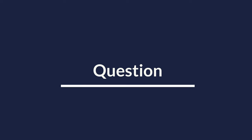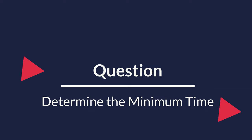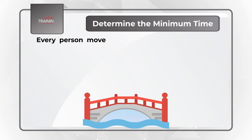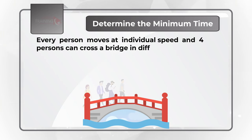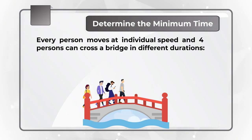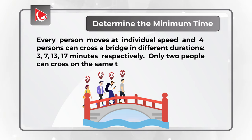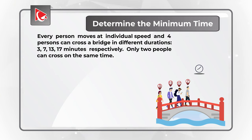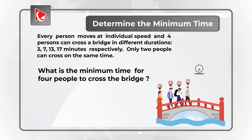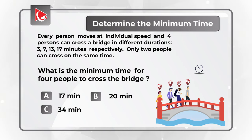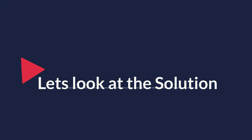Here is an interesting challenge you might frequently see on the test — you need to determine the minimum time for people to cross a bridge. Every person moves at an individual speed, and four people can cross the bridge in 3, 7, 13, and 17 minutes respectively. The trick is that only two people can cross the bridge at the same time. You have four choices: Choice A, 17 minutes; Choice B, 20 minutes; Choice C, 34 minutes; and Choice D, 12 minutes. Let's move forward and get to the correct solution together.